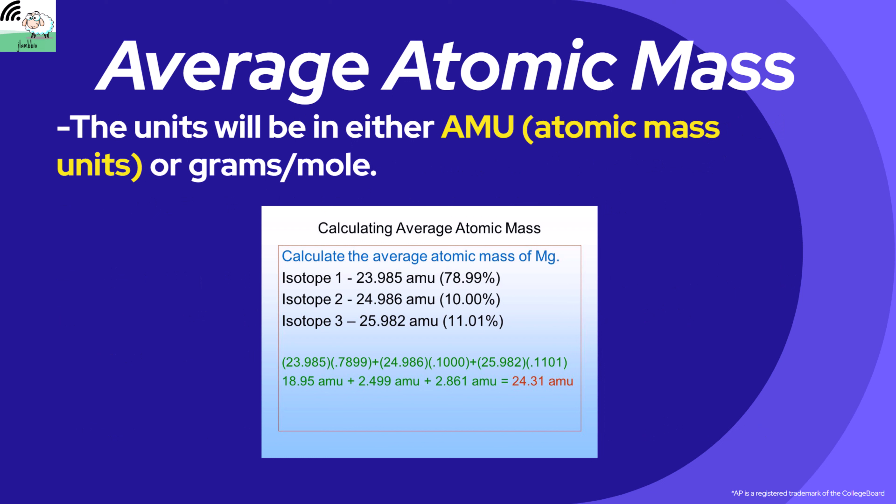The unit for average atomic mass will either be AMU (atomic mass unit), which refers to the mass of each individual atom within the sample, or grams per mole, which refers to a mole of a sample — 6.02 × 10²³ atoms. Looking at the example for magnesium, we have three isotopes: 23.985, 24.986, and 25.982 AMU, with their relative percentages given. We keep the masses the same and multiply by the abundance in decimalized form — so 78.99% becomes 0.7899 — then add them all together to get the average atomic mass.